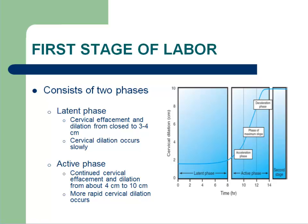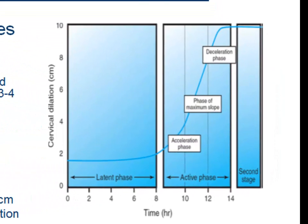The first stage of labor, defined as the period of cervical dilation to 10 cm, is divided into two phases: latent phase and active phase. The graph on the right demonstrates a plotting of cervical dilation over time. During the latent phase, cervical change occurs slowly. During the active phase, cervical change occurs much faster.